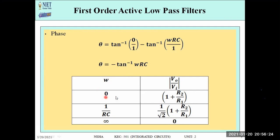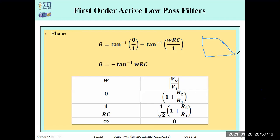At frequency zero, the magnitude is (1 + R2/R1), which is higher than the passive filter's magnitude of 1 — an advantage of using active filters. At the cutoff frequency 1/(RC), the magnitude becomes (1 + R2/R1) divided by root 2. As frequency approaches infinity, the magnitude approaches zero, which is characteristic of a low pass filter.